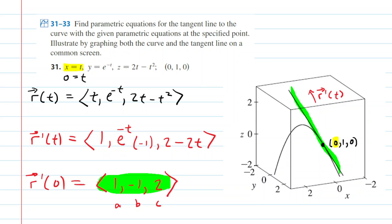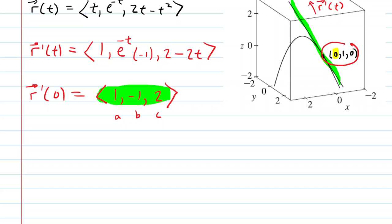So to summarize, we're going to use those exact same direction numbers for our tangent line in green there. And then we have a point on our line (0, 1, 0). So let's take a look at the general equation of a line in parametric form.